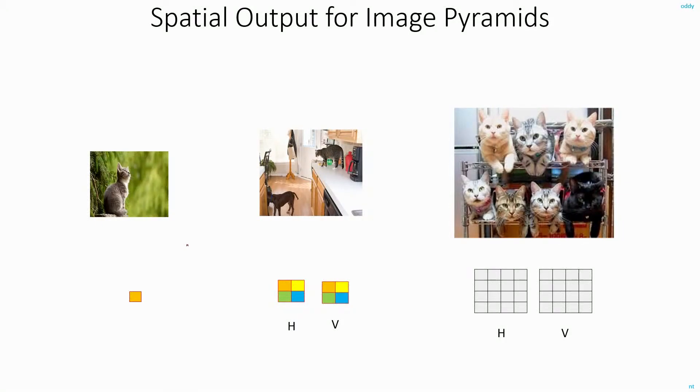The last thing about spatial outputs for image pyramids is that with this scale of the image, if you're getting a 1x1 output, you will be able to detect at max one object in the image. Since your receptive field of the network covers the entire image, you will be able to detect only one object.